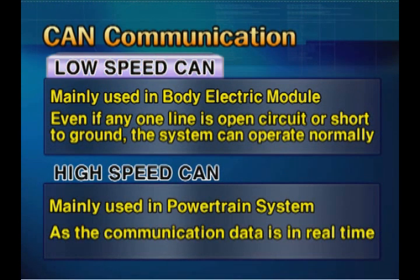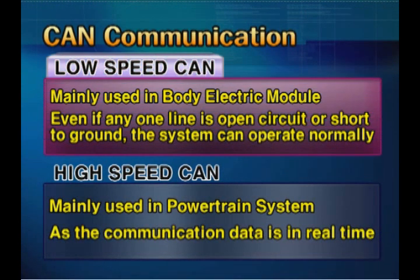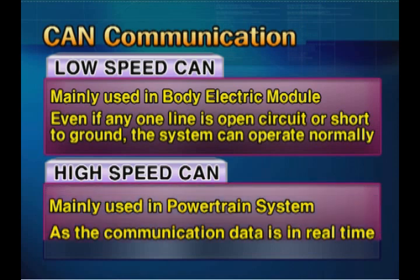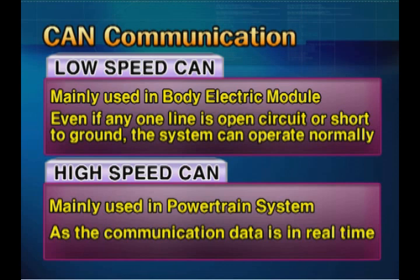Low-speed CAN is mainly used in body-electric devices. Even if any one of the two lines is open circuit or short to ground, the system can operate normally. High-speed CAN is mainly used in the powertrain system, as its communication data in real-time is important data for the engine and transmission.